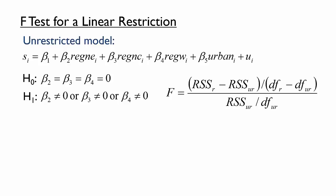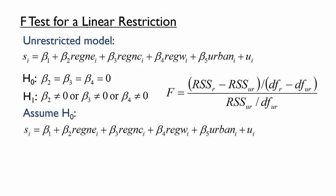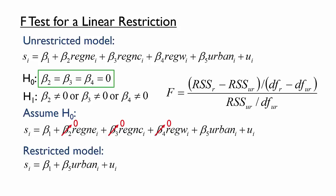To derive the restricted model, we will copy the unrestricted model and then assume the null hypothesis. According to the null hypothesis, Beta-2, Beta-3, and Beta-4 are all 0. This means that the three region dummy variables are now multiplied by 0, so those terms disappear from the model. What is left is the restricted model — that education depends only on the urban dummy variable.